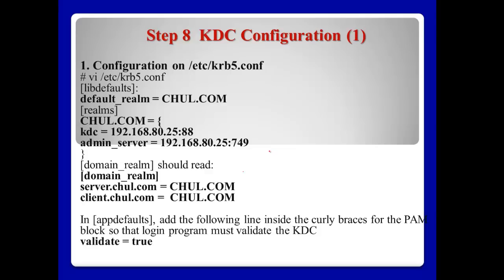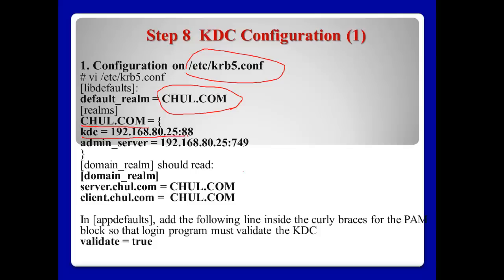Step 8: KDC configuration. If we successfully installed the packages, now let's start configuration of the Kerberos server. First, the file /etc/krb5.conf — this is the main configuration file. Here we need to configure the realm, which is the domain name charl.com. The KDC will have IP address 192.168.25 and a port number.